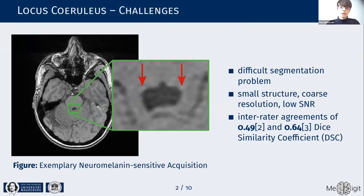However, segmenting and measuring the locus ceruleus is quite challenging. The most prominent problem is certainly the small size of the structure. In comparison to the relatively coarse resolution of MRI, that results in a low signal-to-noise ratio and makes it hard even for expert raters to segment it.